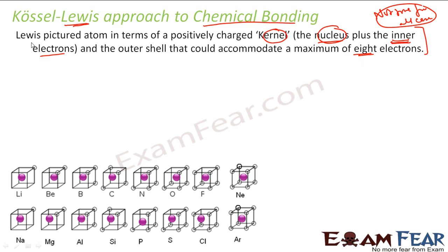We do have scenarios where this theory is proved to be wrong. The theory says that the nucleus plus inner electrons is the kernel, and the outer shell can accommodate at the max 8 electrons. For example, lithium has only one outermost electron. Sodium also has only one outermost electron — because sodium's electronic configuration is 2, 8, 1. So in sodium, the inner electrons plus nucleus form the kernel, and the outermost electron is just one.